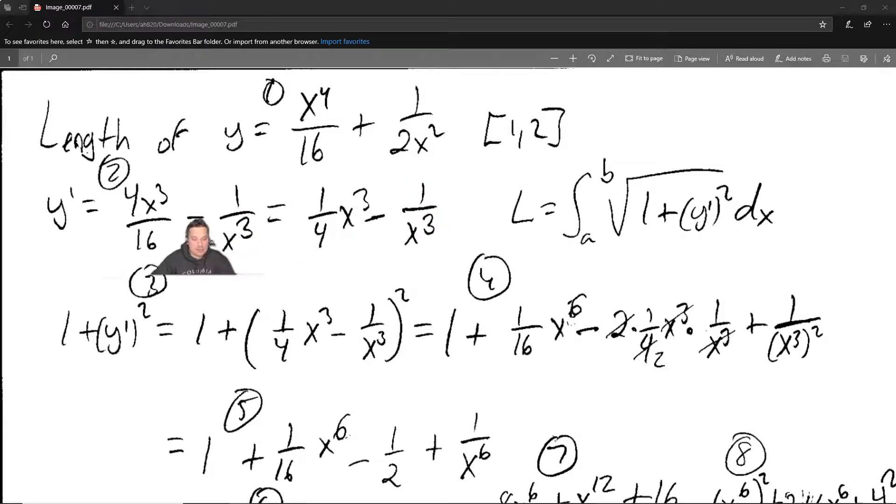But that second part above my head was 1 over 2x squared. Well, when you differentiate that, it's going to give you negative 1 over x cubed. I'm expecting that at this level you know how to do that derivative step. And then here, 4/16 you can simplify to 1 fourth x cubed minus 1 over x cubed.